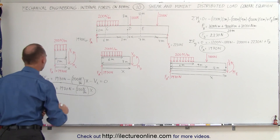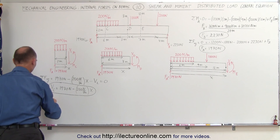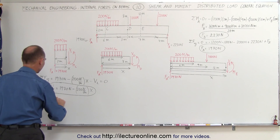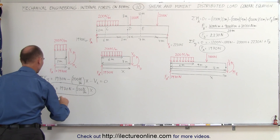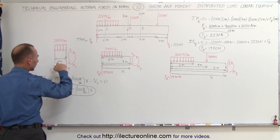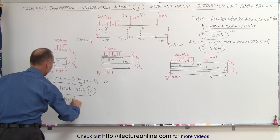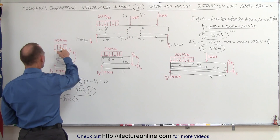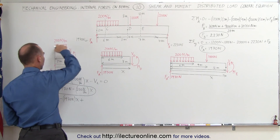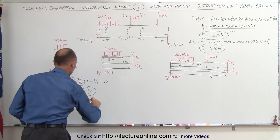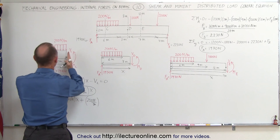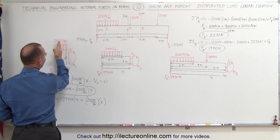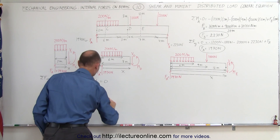Now we find the moment between 0 and 6 meters. We sum up all the moments about point C, and they add up to 0. The first moment is caused by the reaction force — it's a negative moment because it acts in a clockwise direction: minus 1,970 N multiplied by the distance x. To that we add the distributed load moment, which is positive because it acts counterclockwise: 200 N per meter times x, times the moment arm at the halfway point, which is x divided by 2.